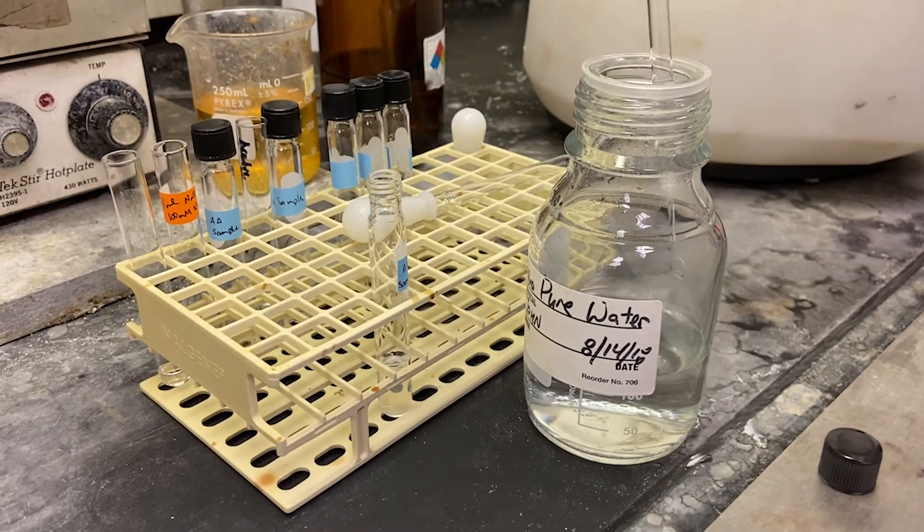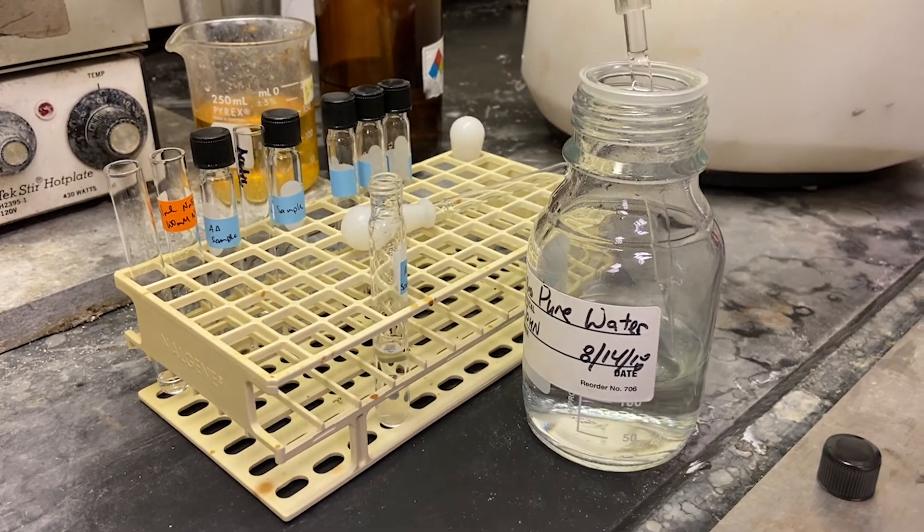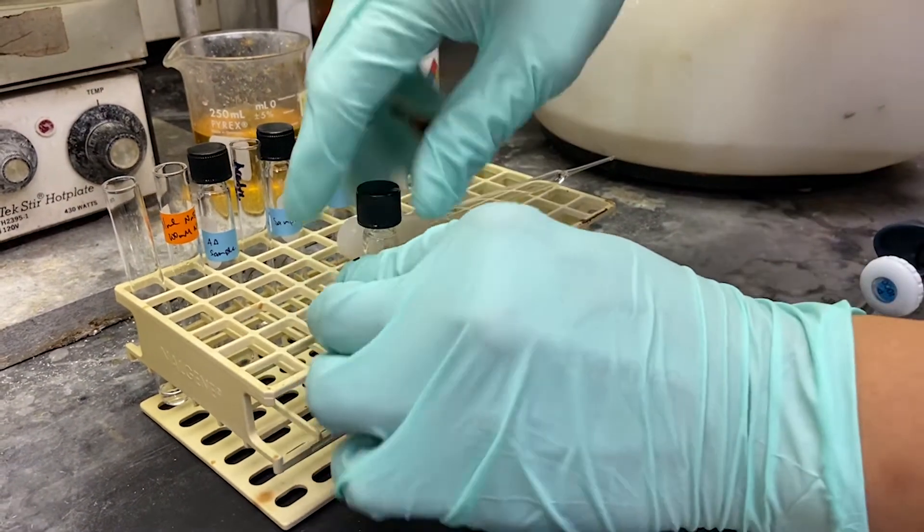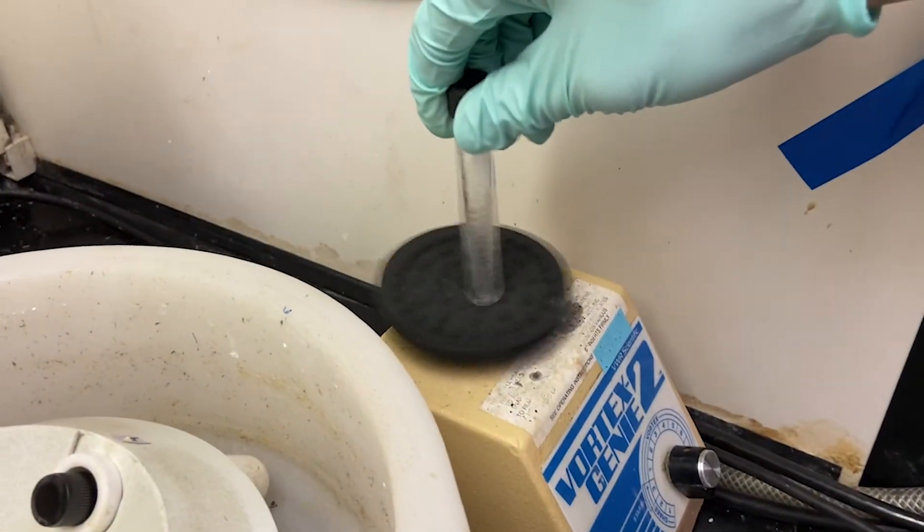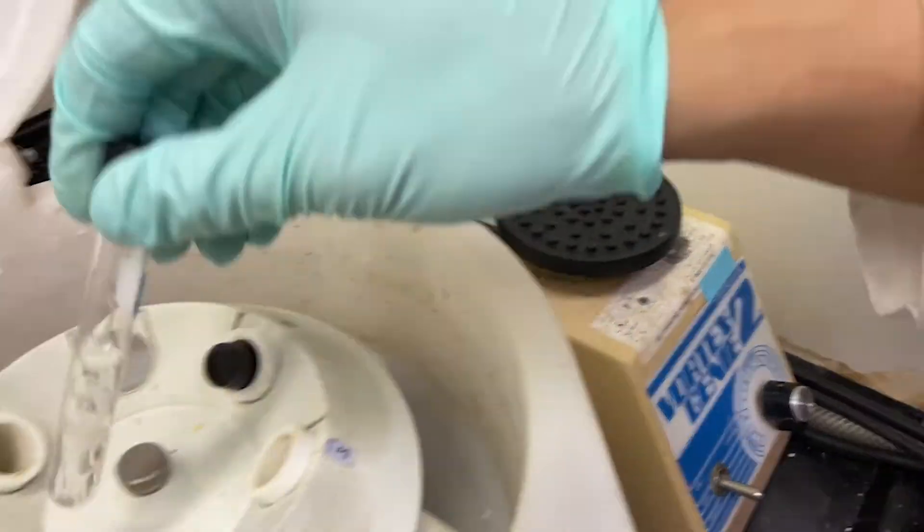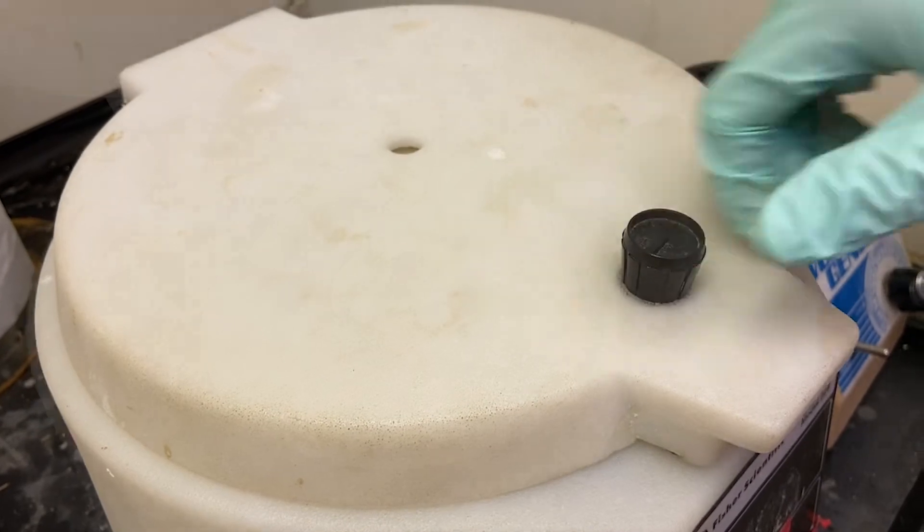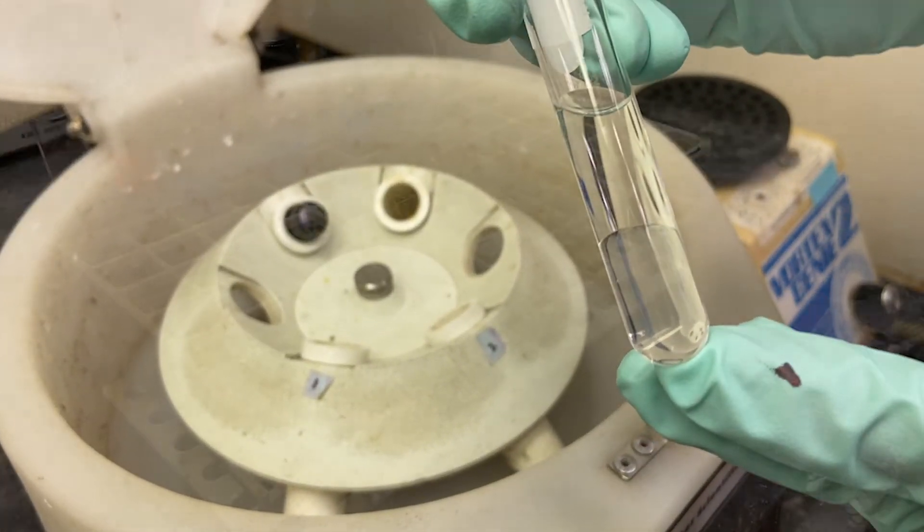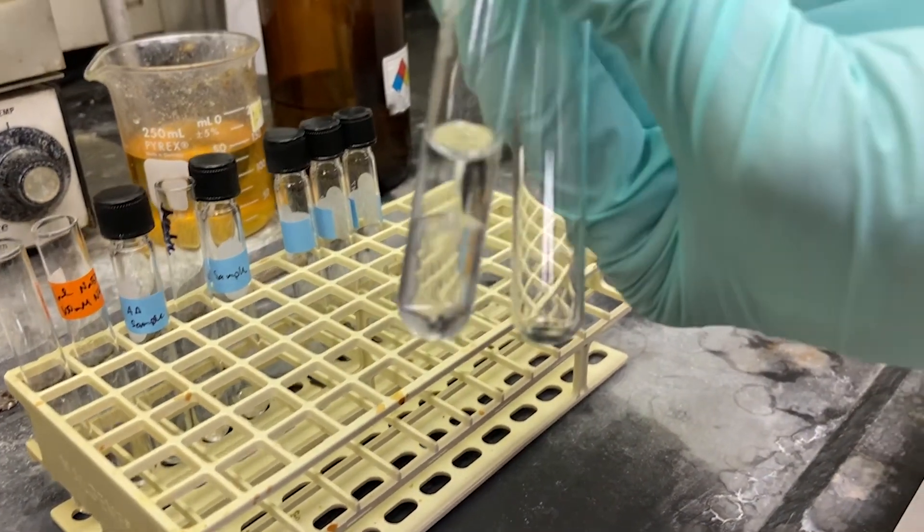This process is repeated again and up to 3 or 4 times with 2 milliliters of water added, vortexed, centrifuged, and the water layer removed. On the final wash, the DCM layer is transferred to another tube to be dried down.